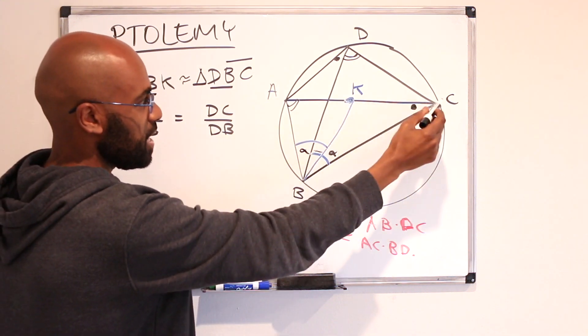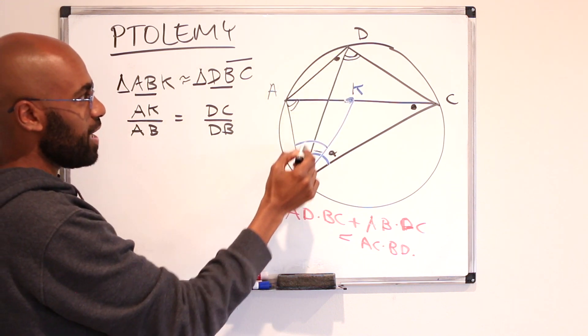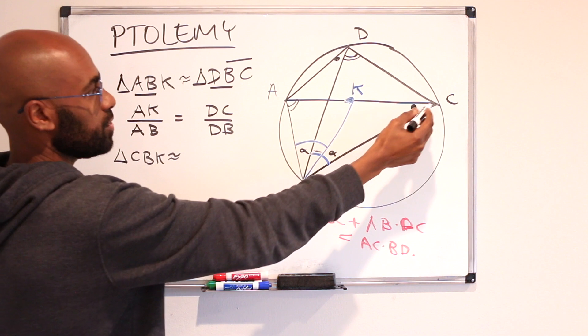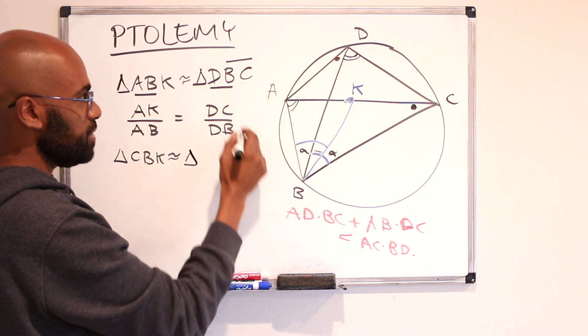So in CBK we have alpha and this dot and in DBA we have alpha and this dot so we have another pair of similar triangles. We have triangle CBK is similar to triangle DBA.